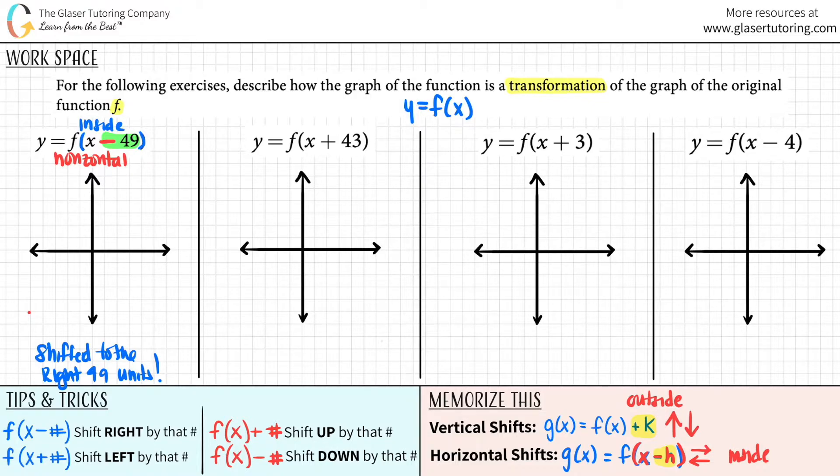So 49 units over. So let's just say that this, if I can just draw, if this was my original graph, right? Y equals f of x. What happened was your new graph shifted to the right, 49 units.